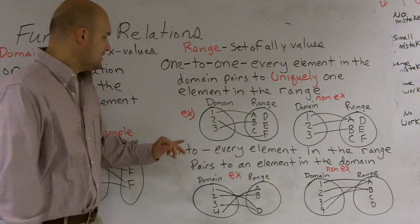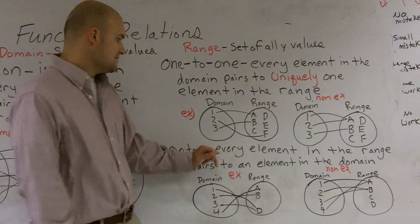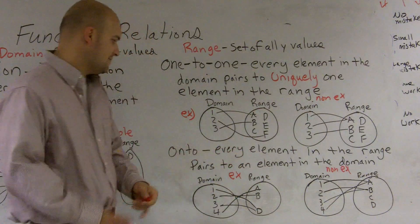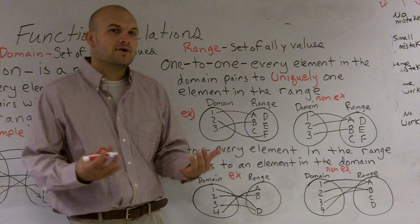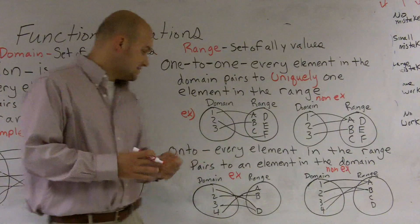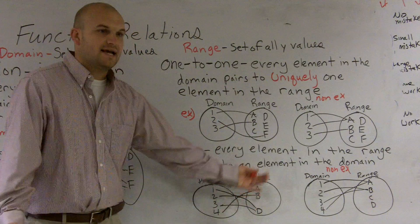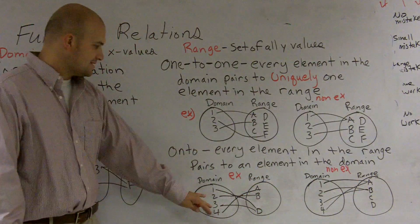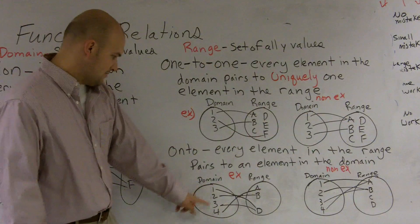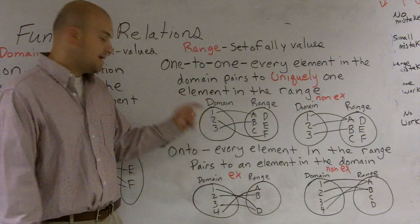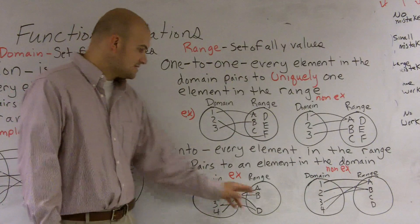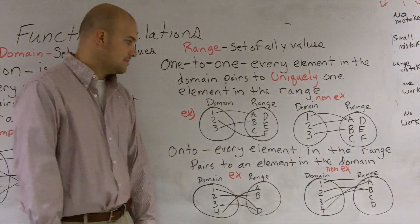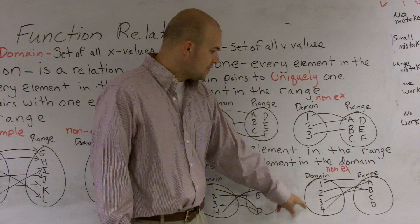The second type of function is an onto function. An onto function says every element in the range pairs to an element in the domain. All we need for it to be onto is that every single element in the range is taken care of — everything in the range has been mapped to from the domain. Here, one and three both go to d, so it's not one-to-one, however it is onto because d, b, and a all have maps from the domain.